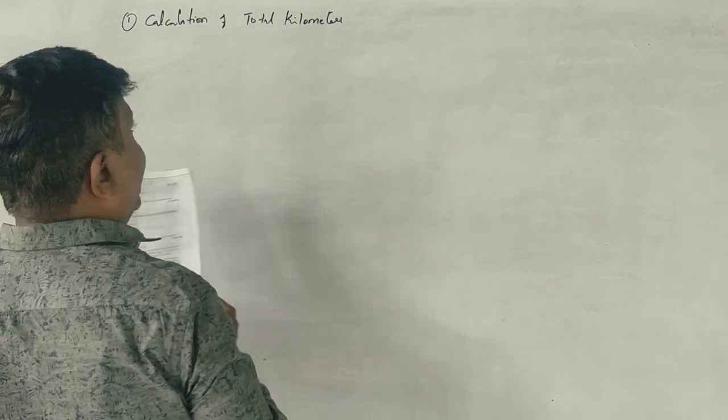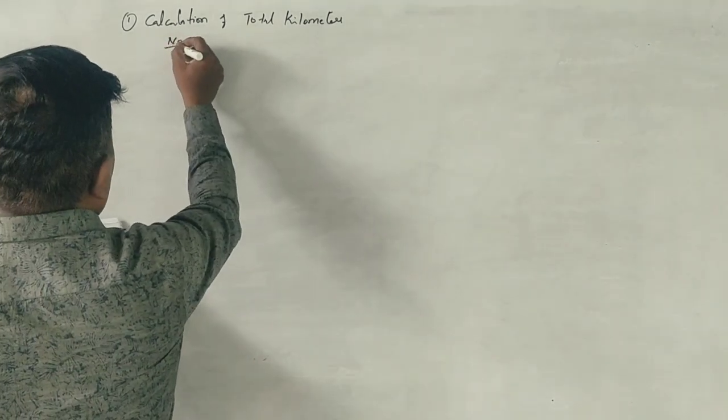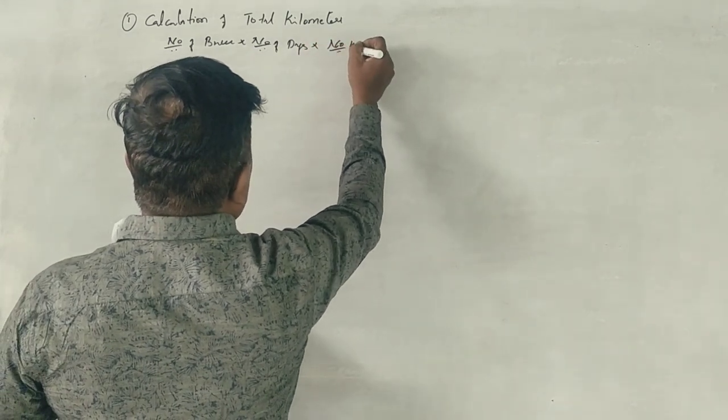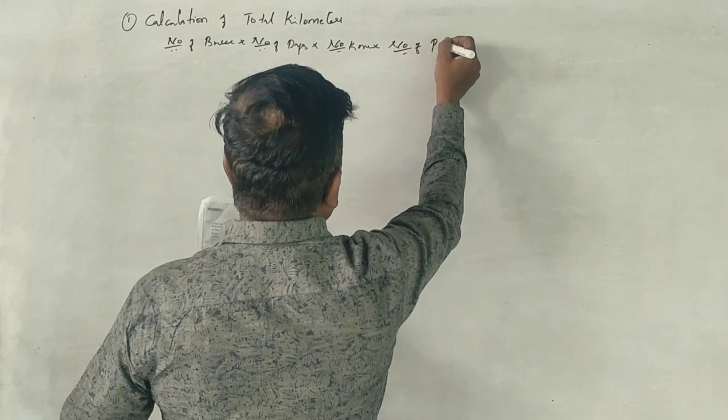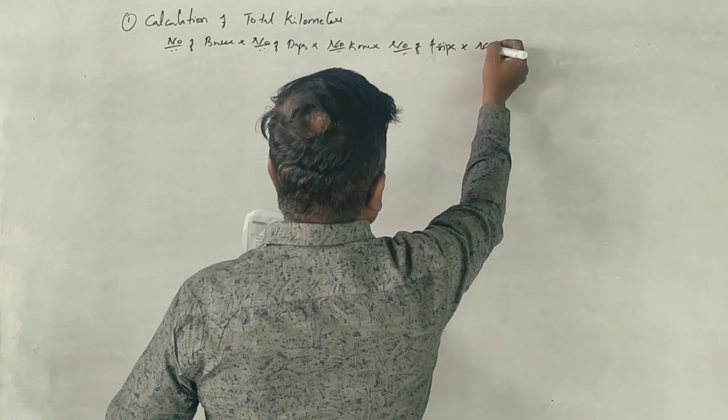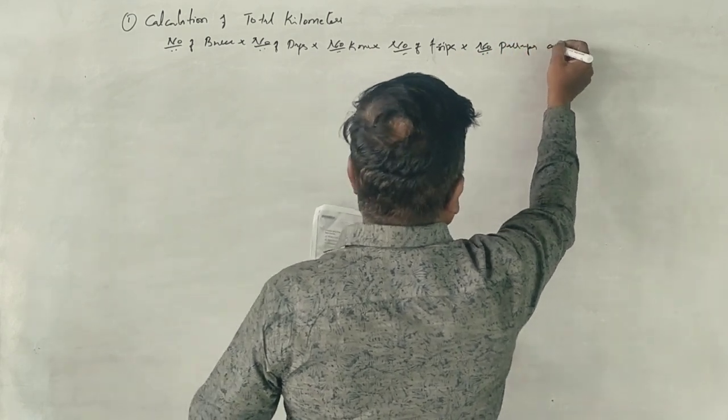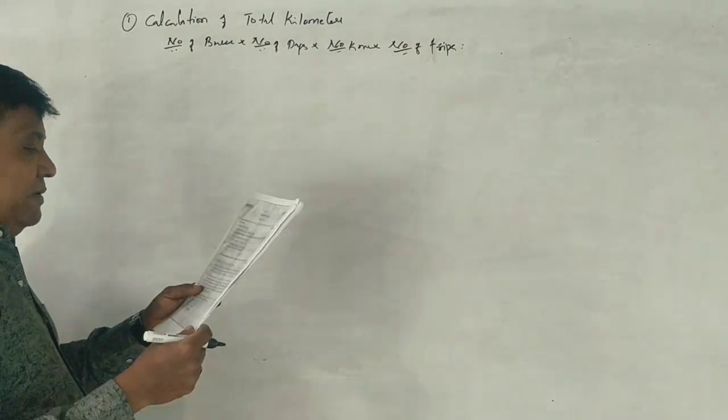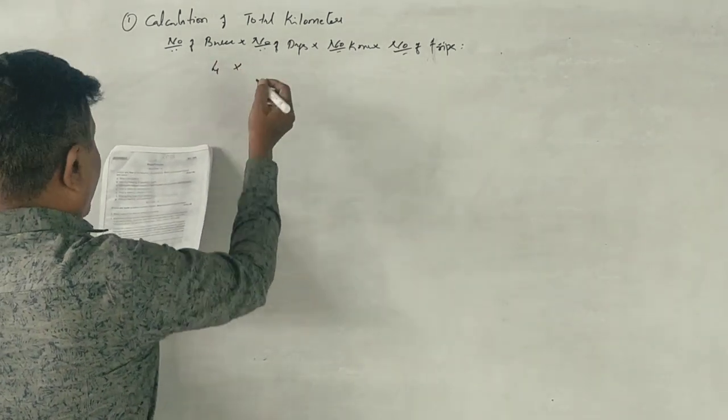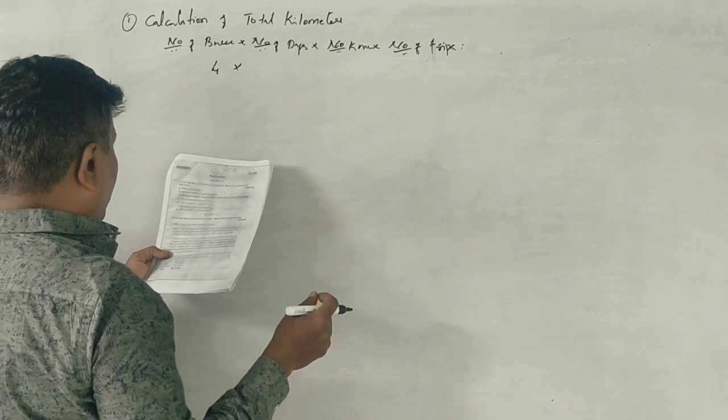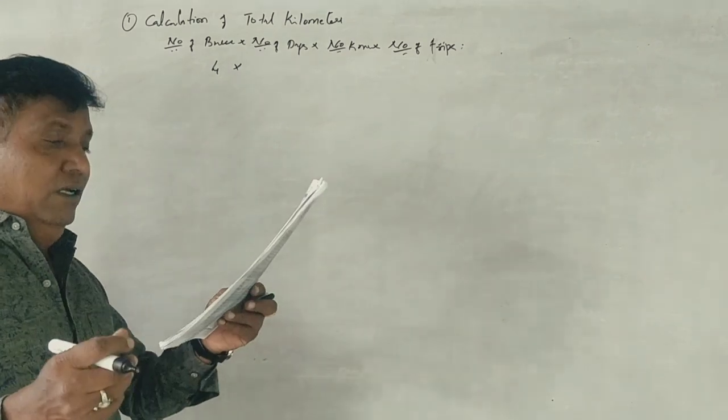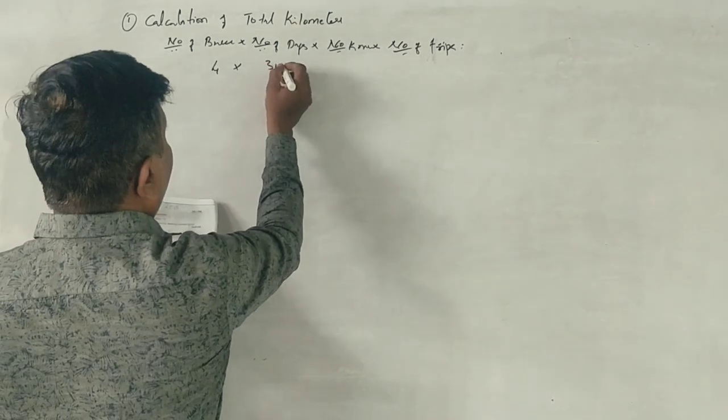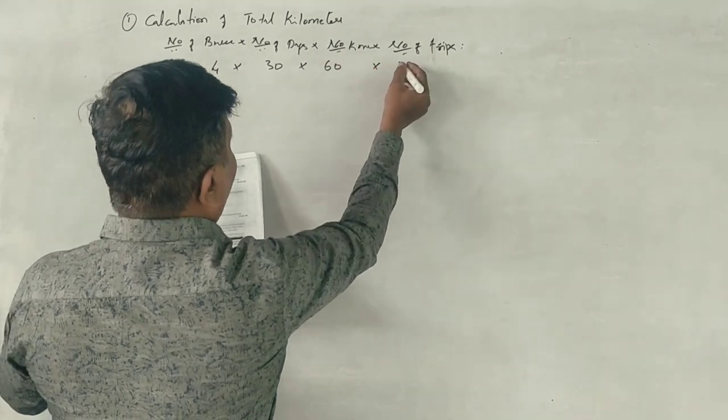Total kilometers. The number of buses, number of days in a month at the end, for a month.